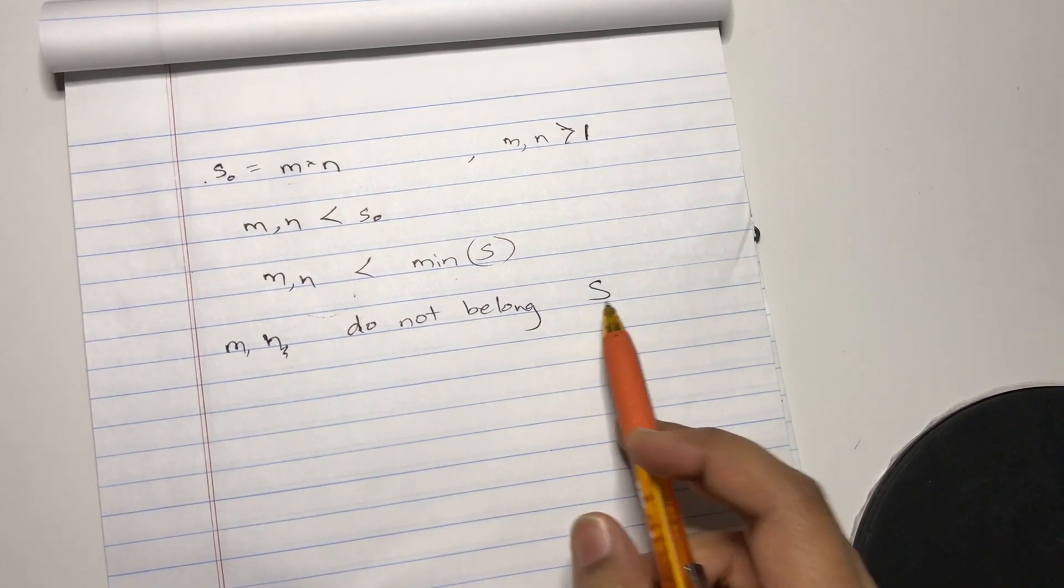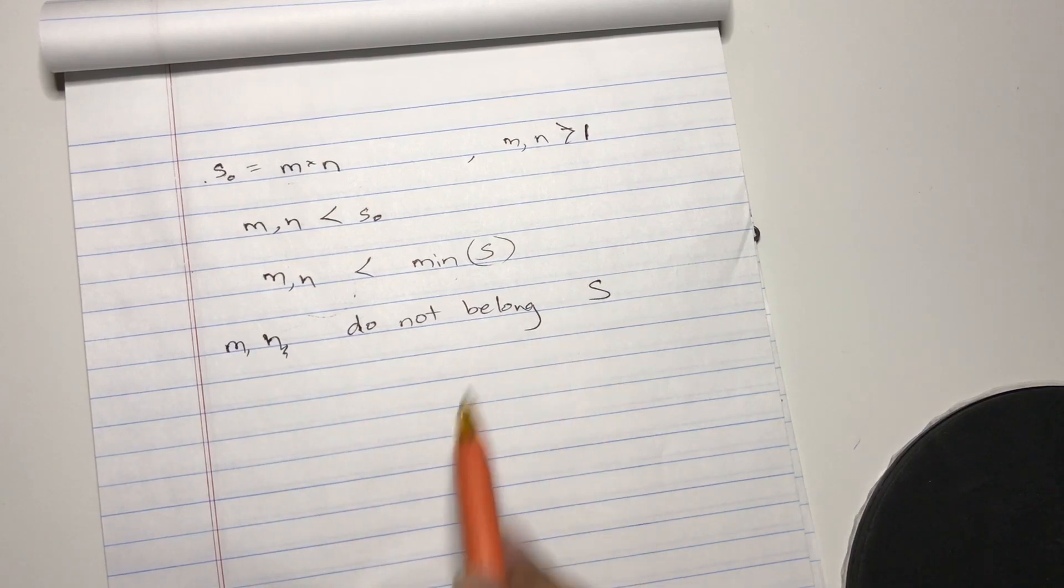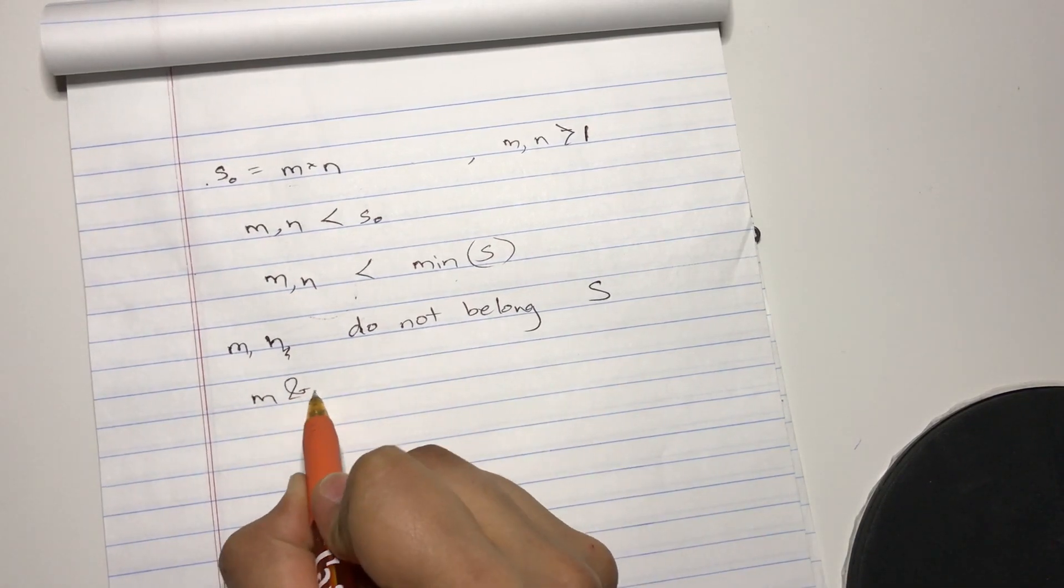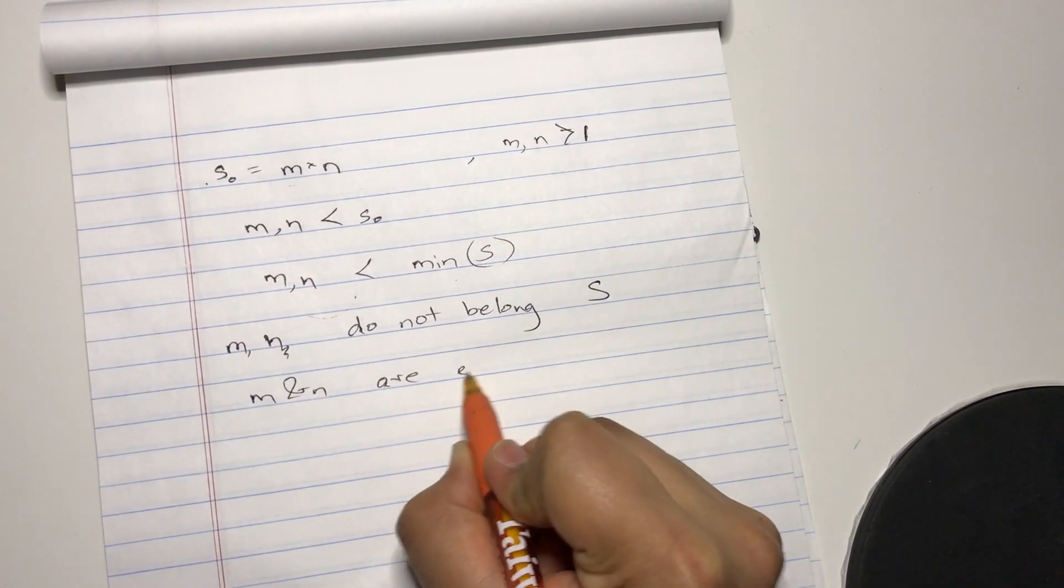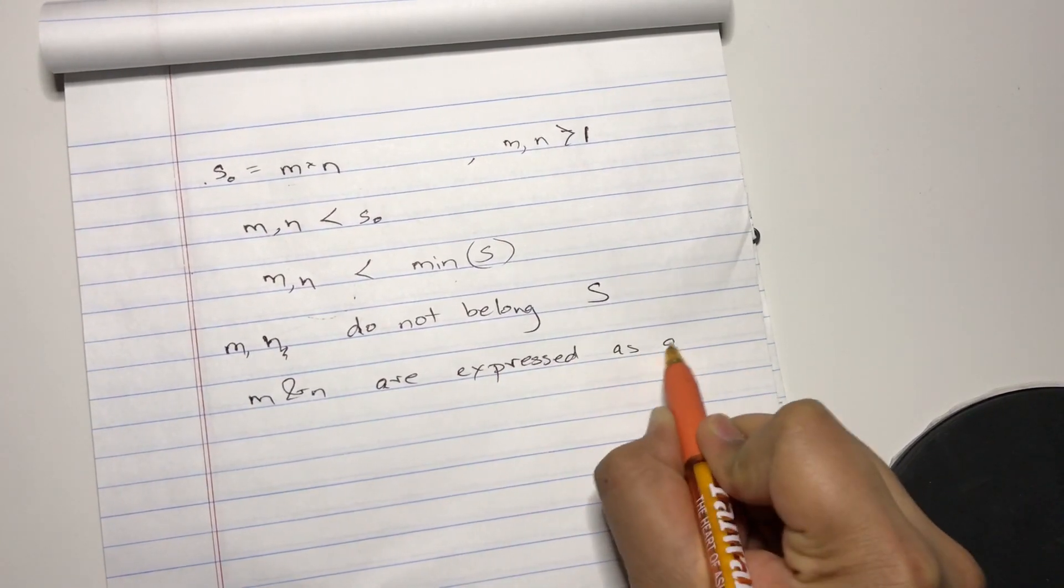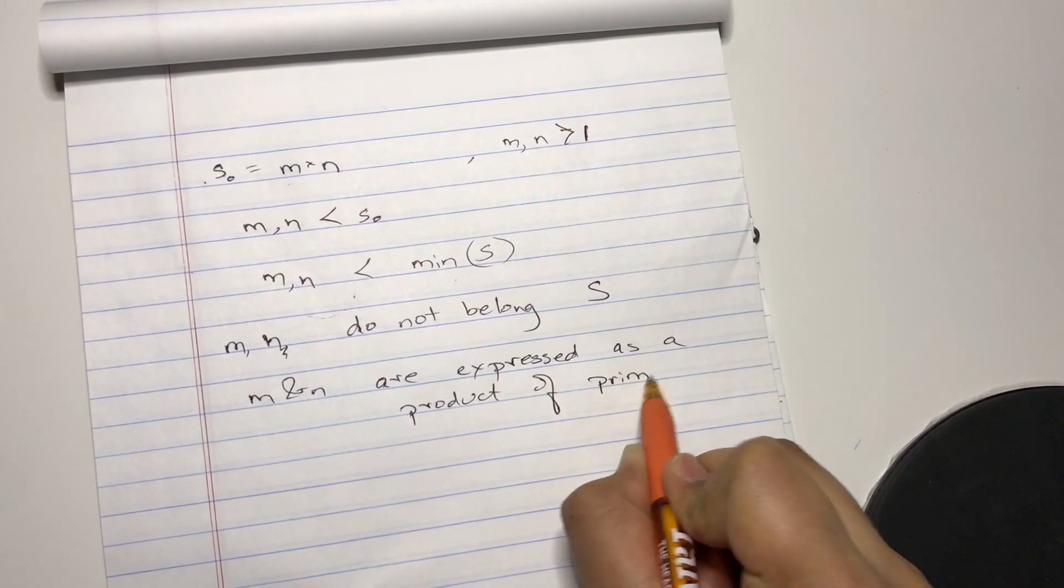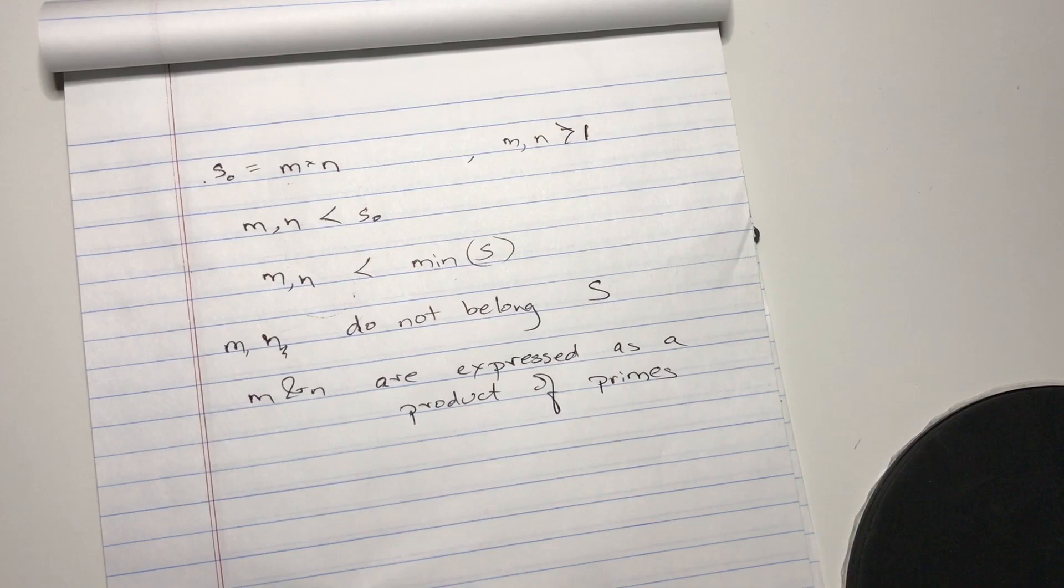Belonging to the set S means that number cannot be expressed as a product of primes. And M and N do not belong to the set S, so M and N can be expressed as a product of primes. Because if they couldn't, they would belong to the set S.